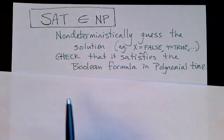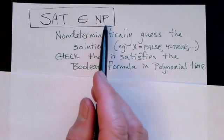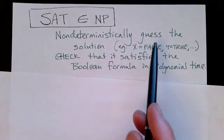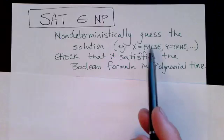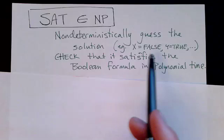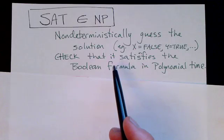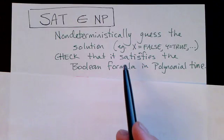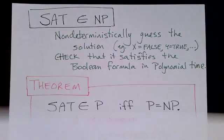First, let's note that SAT is in NP. What we can do is we can non-deterministically guess a solution. For example, the solution we saw in the previous slide, X is false, Y is true, and Z is false. And then we can check that that solution satisfies the Boolean formula and we can do that check in polynomial time. So that proves that SAT is a member of NP.